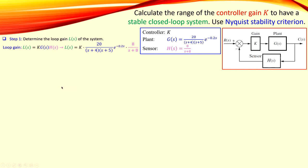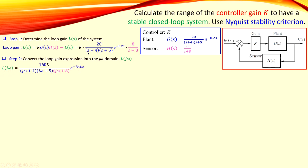Since we need to analyze this in the frequency domain, we convert from the s-domain to the j-omega domain, replacing s with j-omega. Simplifying, we can make 8 times 20 equal to 160; K is placed in the numerator, and (s+4)(s+5)(s+8) goes in the denominator. We have the resulting expression with the exponential time-delay term at the end.